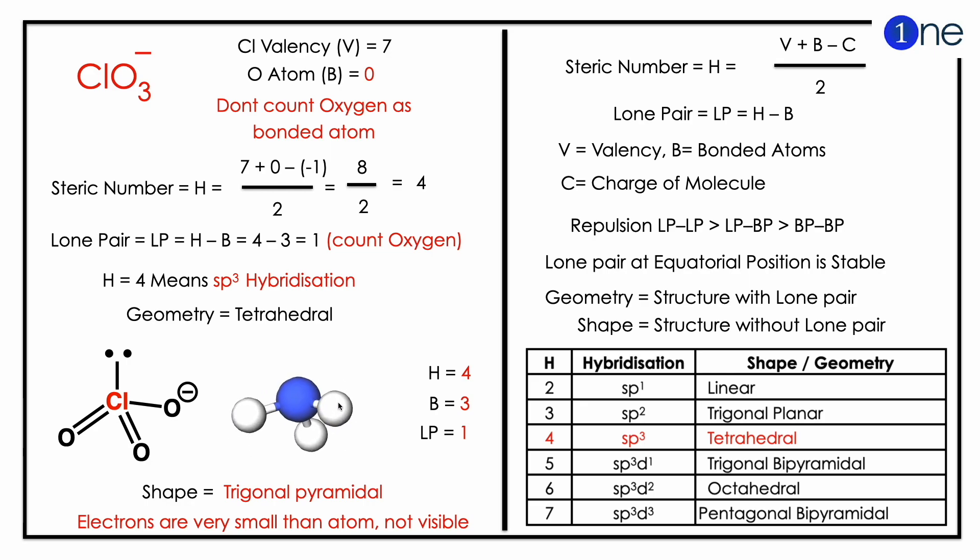So if you substitute in the formula, you will have 7 plus 0 minus 1, whole divided by 2, which means 8 by 2, which gives 4. The lone pair calculation is 4 minus 3, which gives 1. So you have H equals 4.